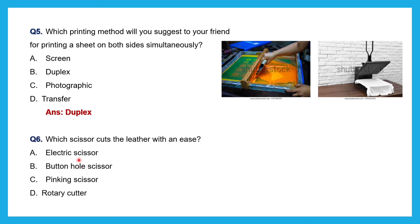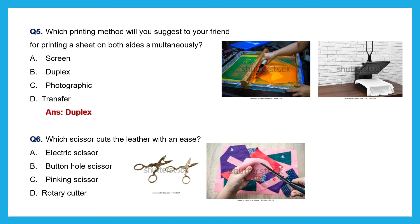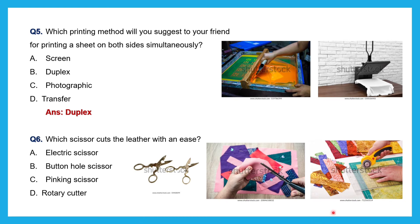Sixth question: Which scissor cuts leather with ease — electric scissor, buttonhole scissor, pinking scissor, or rotary cutter? Buttonhole scissor is used to make buttonholes. Pinking scissor, also called zigzag scissor, gives a zigzag cut that helps prevent ravelling of threads. The rotary cutter is used for cutting heavy fabric like leather and can cut 50 to 100 layers of fabric at a time. So the rotary cutter is the scissor that cuts leather with ease.